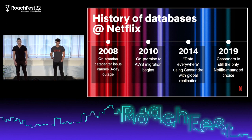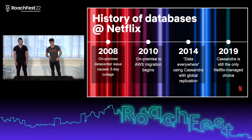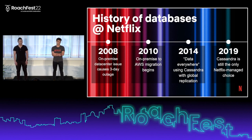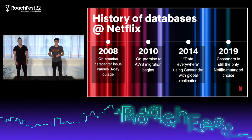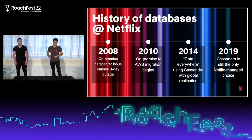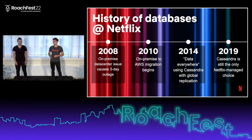Back in 2008, we were still an on-premise data center running Netflix's streaming service, and there was a major issue that caused a very long outage. At that point, it was decided we're going to make a risky decision and migrate to the public cloud on AWS. So in 2010, we started that migration, and eventually we got into AWS.